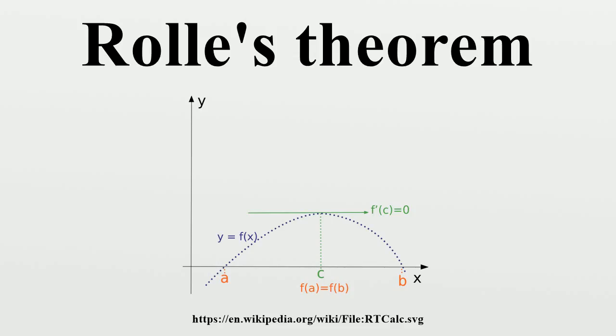Suppose then that the maximum is obtained at an interior point c of (a, b). We shall examine the above right and left-hand limits separately. For a real h such that c plus h is in [a, b], the value f(c + h) is less than or equal to f(c) because f attains its maximum at c. Therefore, for every h greater than zero, [f(c + h) - f(c)]/h ≤ 0, hence the right-hand limit is ≤ 0, where the limit exists by assumption, it may be minus infinity. Similarly, for every h less than zero, the inequality turns around because the denominator is now negative and we get less than zero, hence the left-hand limit might be plus infinity. Finally, when the above right and left-hand limits agree, then the derivative of f at c must be zero.